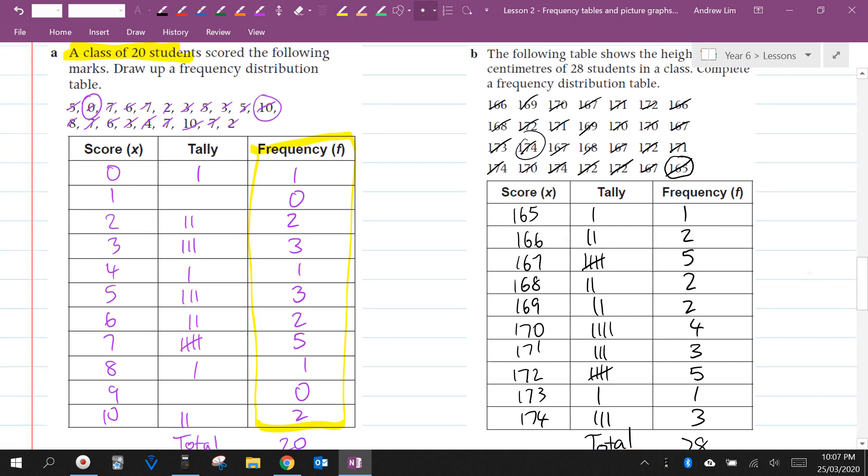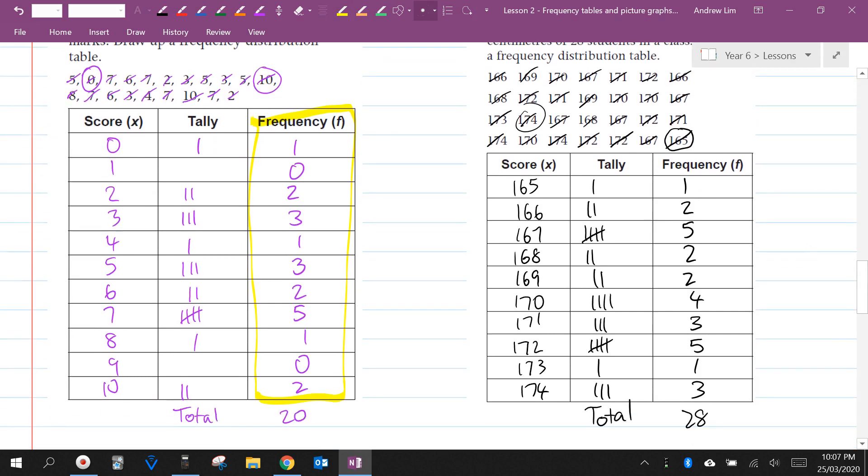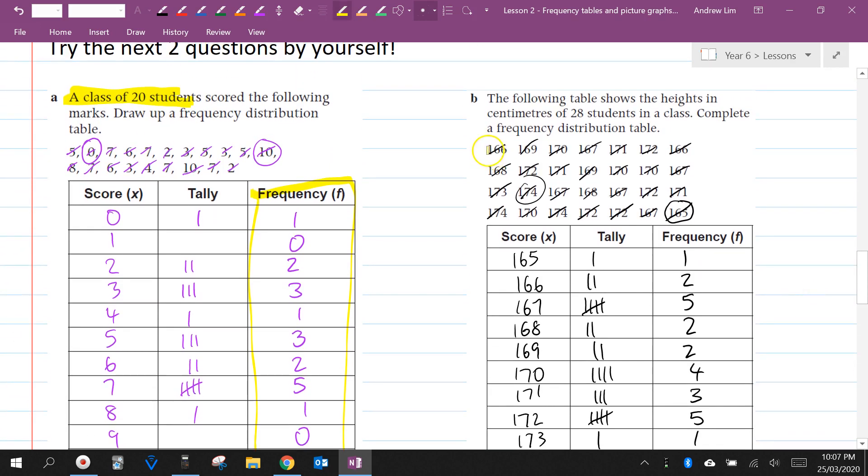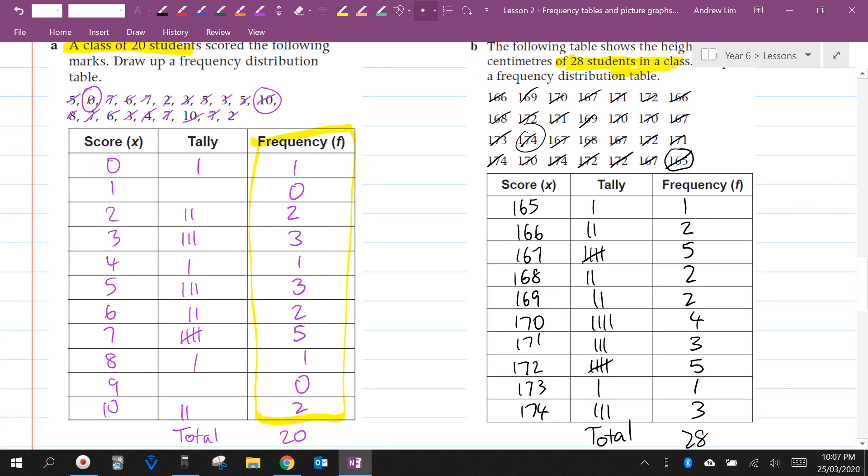Here for the second question for part B, I've got a total of twenty-eight. And instead of just saying four times seven, twenty-eight, you could see that the question says that there are 28 students in the class. So just check your answers, make sure that you got them right.